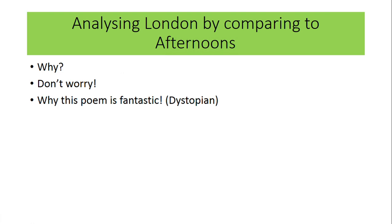The reason we're analyzing London by comparing it to Afternoons is because the comparison section of this exam is worth 25 marks out of 40 for the whole section, and it has been for the last three years the poorest answered question in the whole of literature. So it doesn't make sense to spend all our time analyzing these poems independently and then trying to squeeze in comparison near the end. I'm going to embed the comparison as we learn the poems.